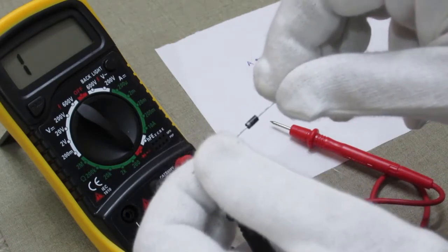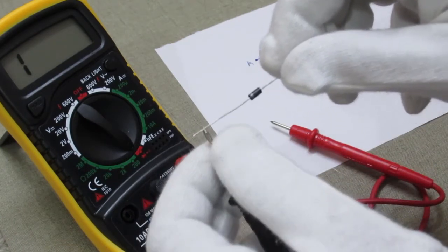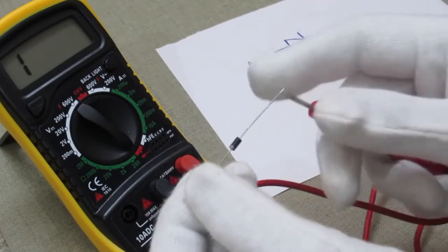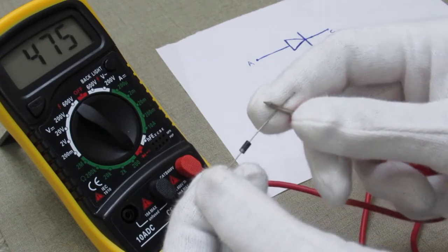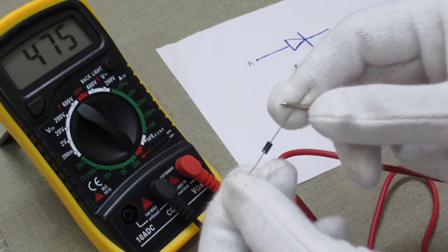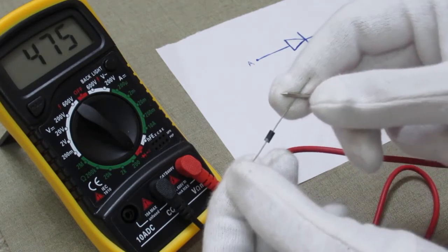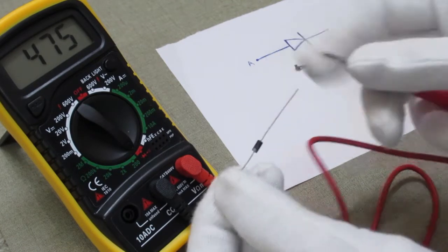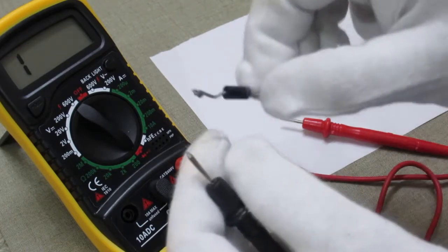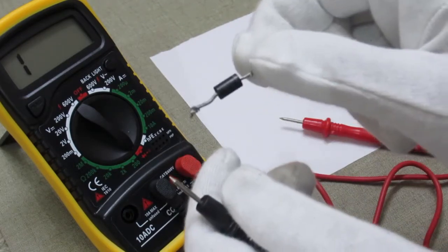Touch black probe to cathode and red probe to the anode. As you can see, the digital multimeter is showing the numbers. That means this diode is okay and it is working properly. Now let's check another diode.